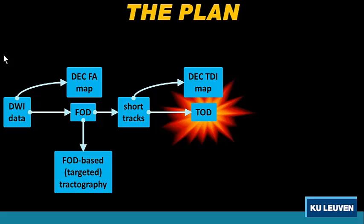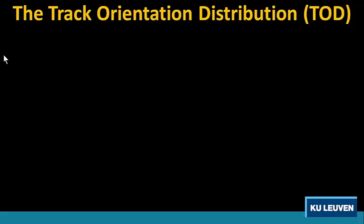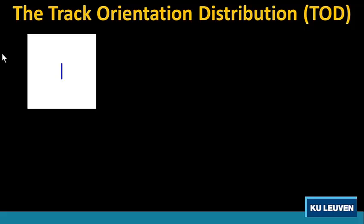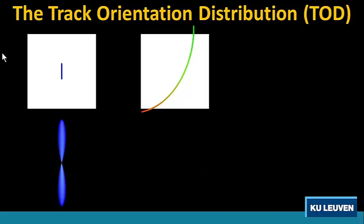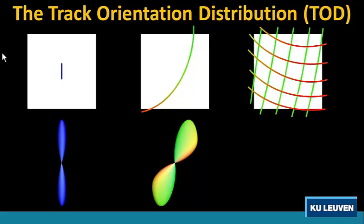Now my true friend is going to appear — it's the TOD, filling in the gap. The TOD is what I call the Track Orientation Distribution. It's a generalization of the TDI map to the full five-dimensional spatial-angular space. How does it work? Here's your average track segment, which I'm going to represent by a kernel — an apodised delta function up to order 16. We can use this to map a full track by integrating this kernel along the track in a continuous manner. And for a full distribution of tracks, we just add the contributions — and for this simple example, you get this, where the curvature is also nicely represented.